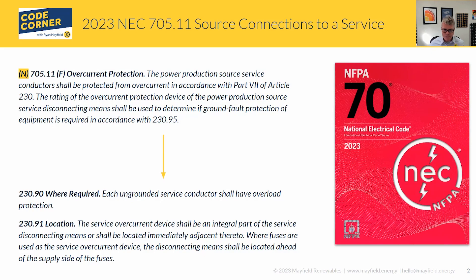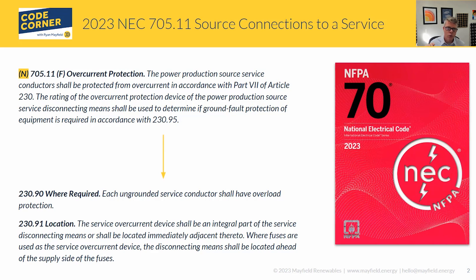I'll show you a picture towards the end. The question that came up originally was: in 2023, 705.11F is overcurrent protection. In 2020, if you're doing a compare and contrast, that was in subsection C — still overcurrent protection but in subsection C. And that's where we found the limitation of 10 feet or 70 feet, depending on commercial versus residential applications. In 2023 it gets moved to F.